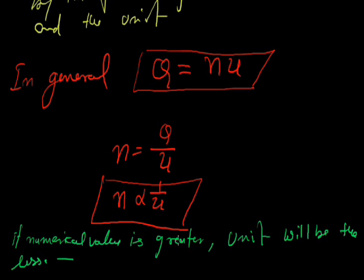For example, if length is equal to 10 meter is equal to 1000 centimeter, it means if unit is less, numerical value will be greater. And if unit is bigger, then the numerical value is less. So we can say the physical quantity is the same, but numerical value depends on the unit.